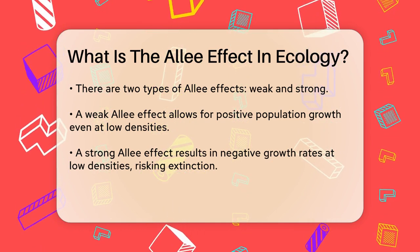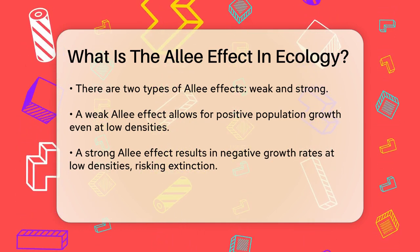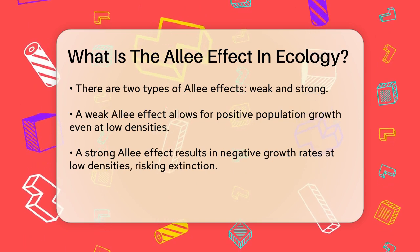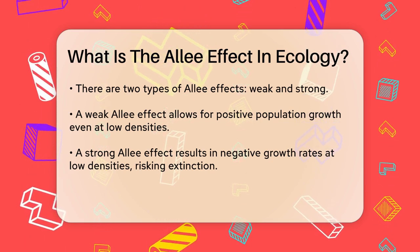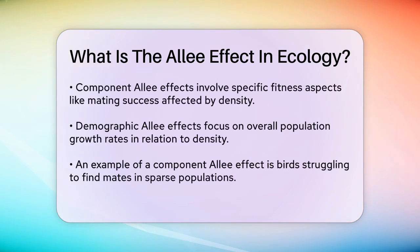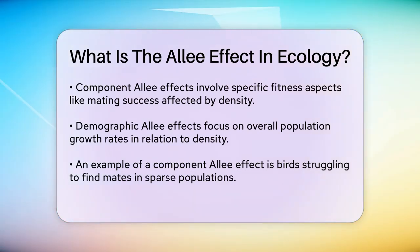To break it down further, there are also component and demographic Allee effects. Component Allee effects involve specific components of fitness, such as mating success or predator avoidance, that are affected by population density. Demographic Allee effects look at the overall population growth rate and how it changes with density.